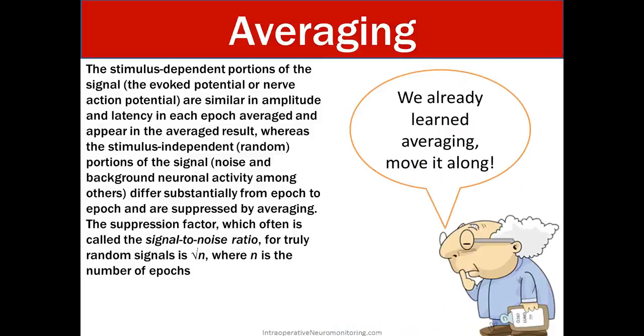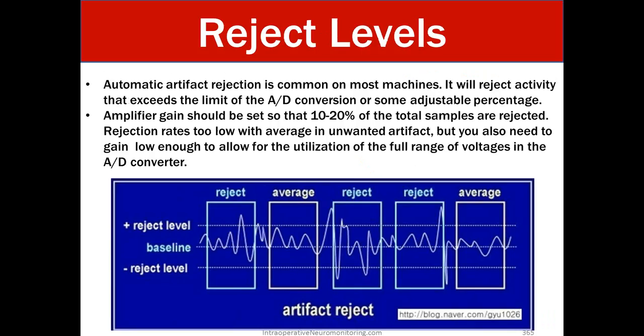Averaging. The stimulus dependent portion of the signal or the evoke potential at nerve action potential are similar in amplitude and latency in each epoch averaged and appears in the average results whereas the stimulus independent or the random portion of the signal which is the noise or background neuronal activity among others differs substantially from epoch to epoch and are suppressed by averaging. The suppression factor which often is called the signal to noise ratio for truly random signals is the square root of n where n is the number of epochs. So I've gone over averaging and I've gone over signal to noise ratio and suppression factor a lot so you should be pretty familiar with that going into the exam now.